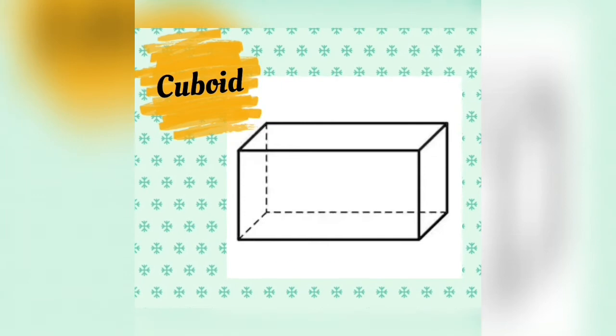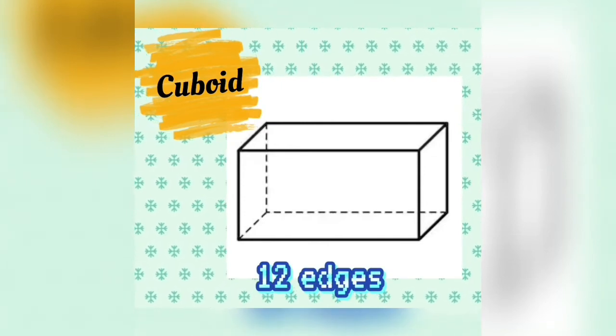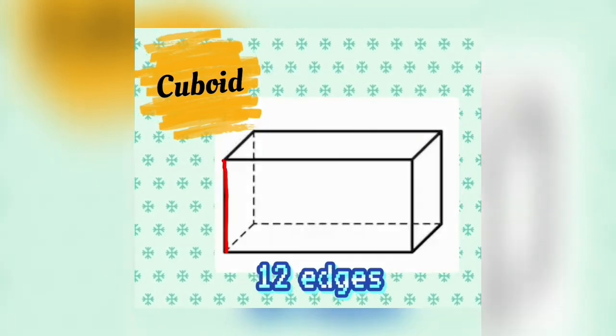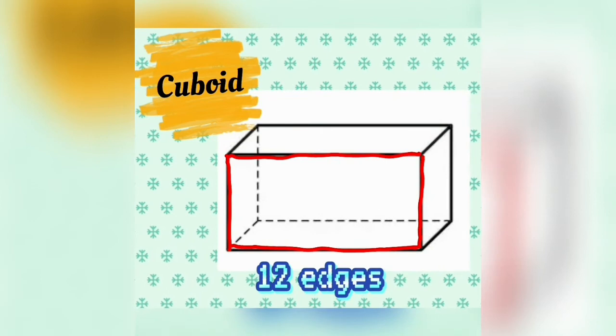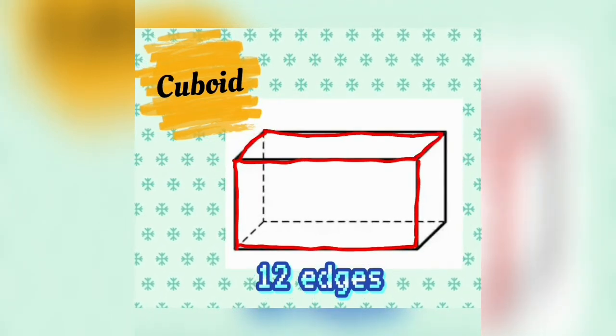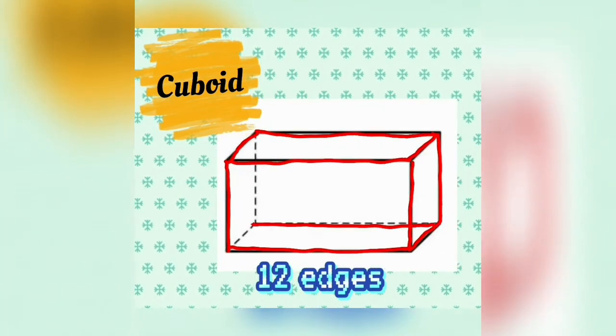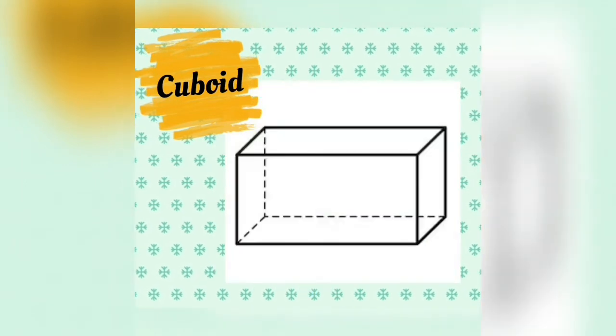Cuboid. It has 12 edges — one, two, three, four, five, six, seven, eight, nine, ten, eleven, twelve.